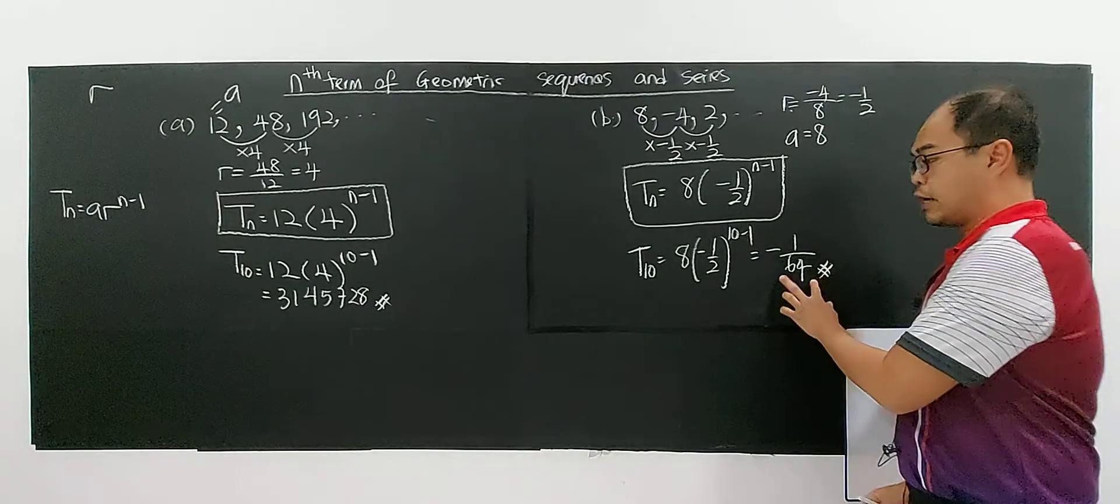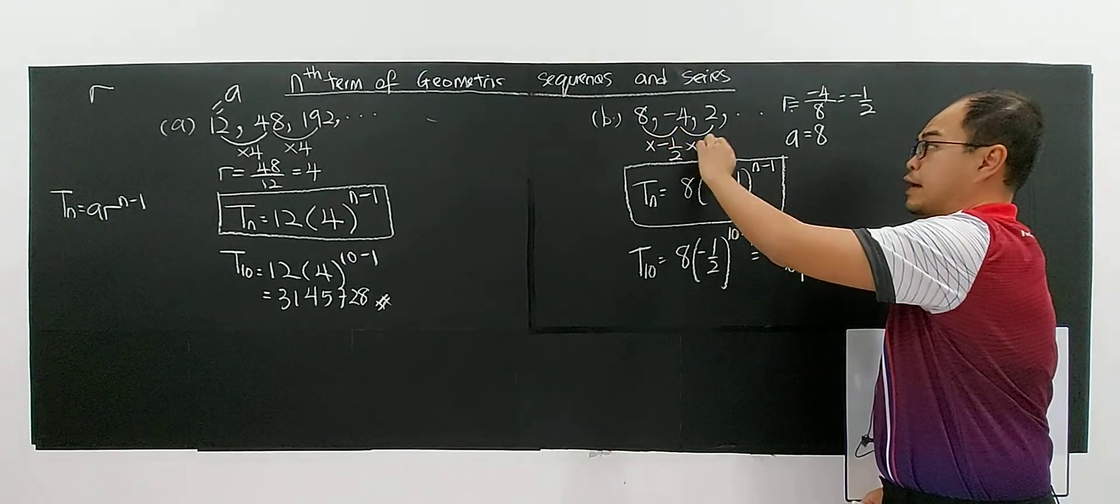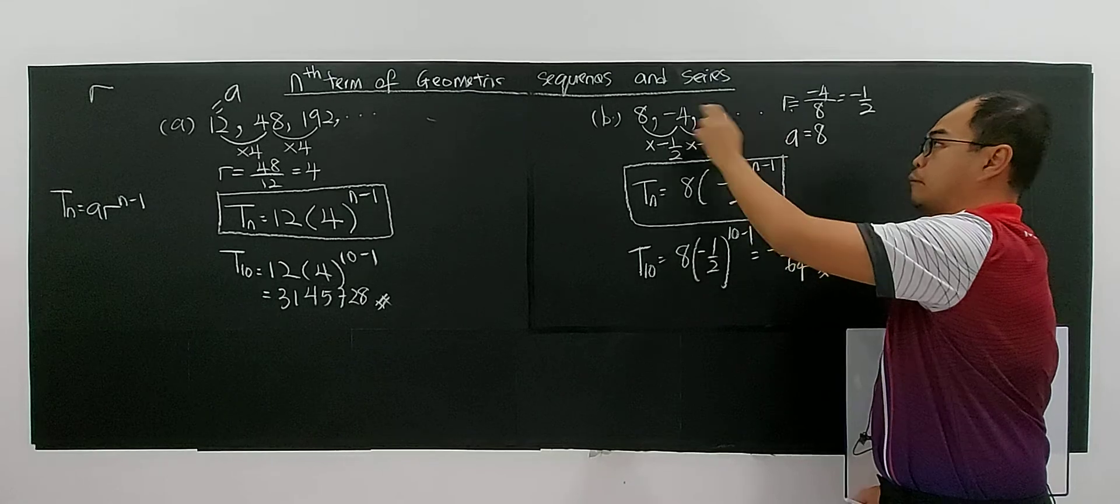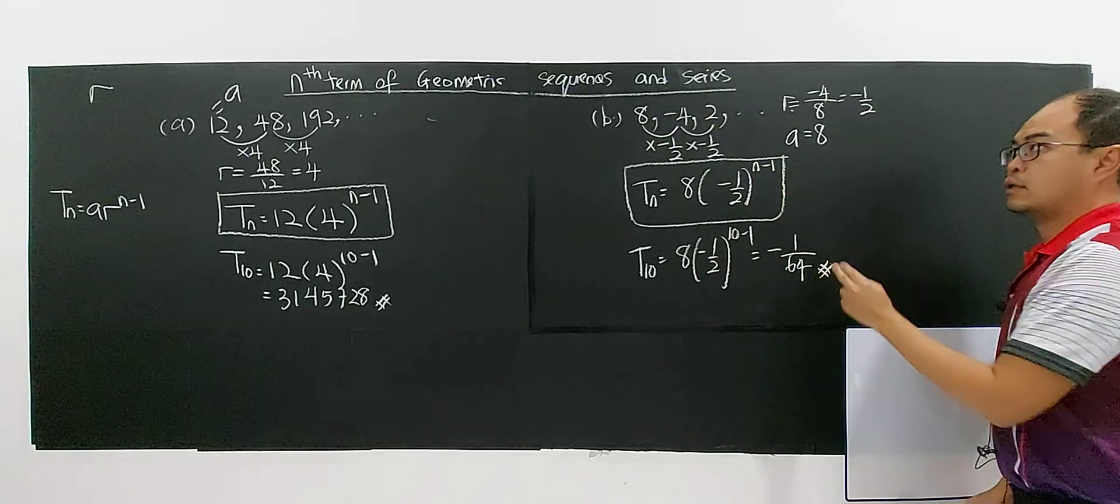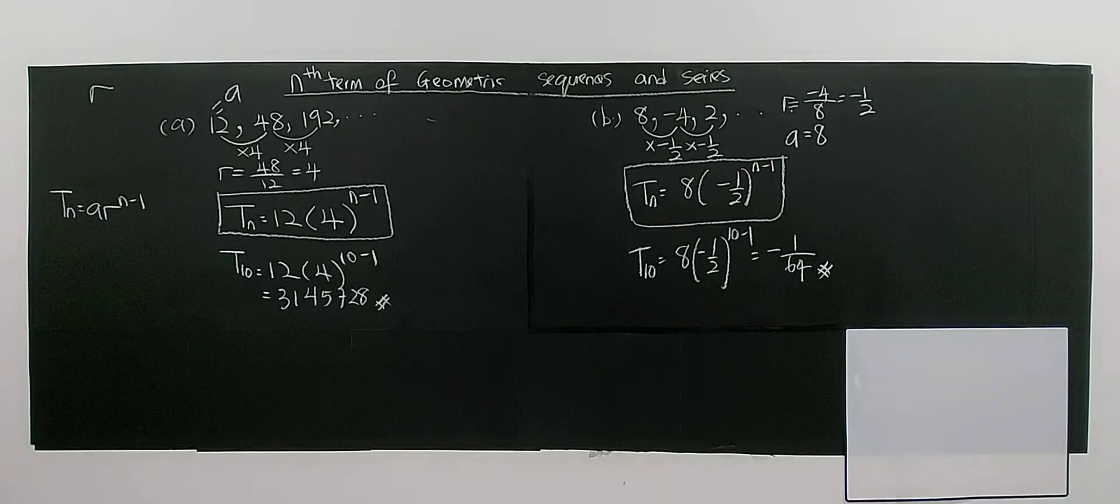So you have negative 1 over 64 as your 10th term. So if you multiply negative 1 over 2 up to 1, 2, 3, 4, 5, 6, 7, 8, 9, the 10th term will be negative 1 over 64. This is what it means by this question.